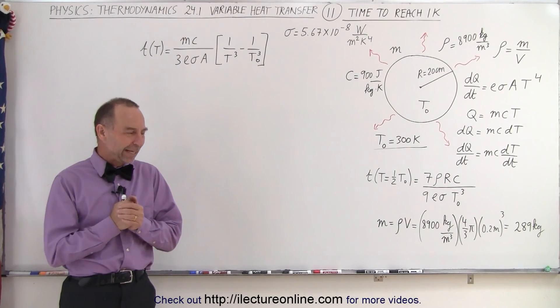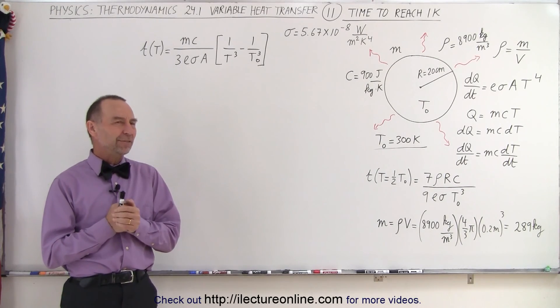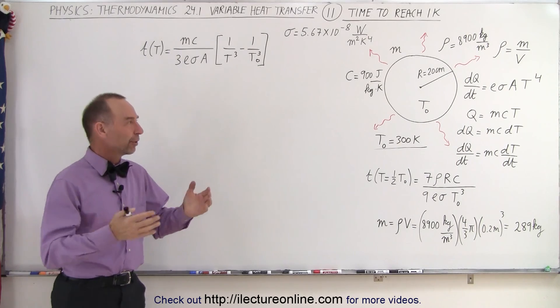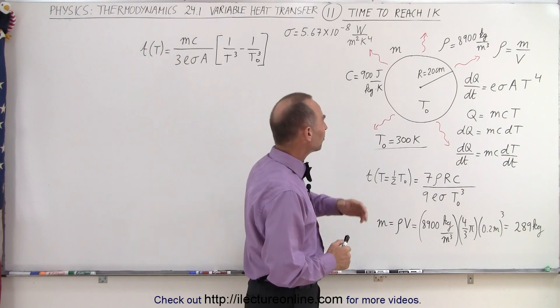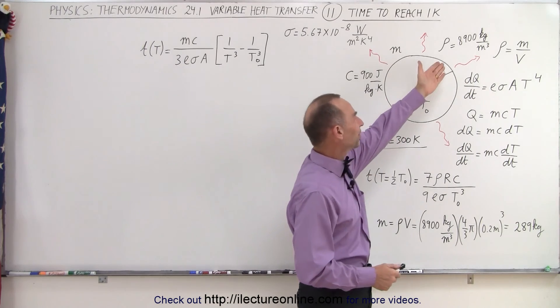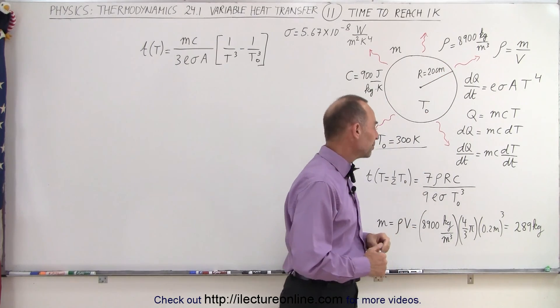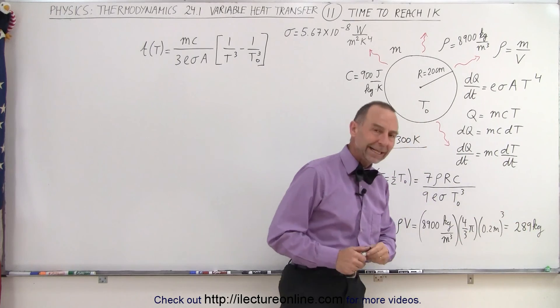Welcome to my lecture online. The next question I ask myself is how long would it take for a sphere made out of metal, radius of 20 centimeters, made out of copper with a density of 8900 kilograms per cubic meter and a total mass of 289 kilograms.